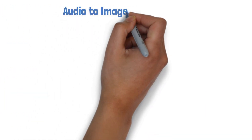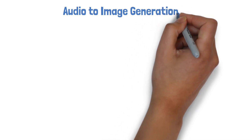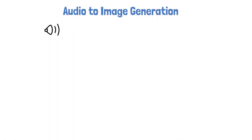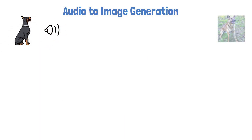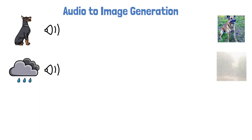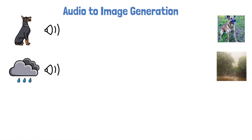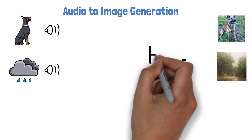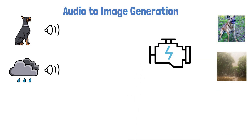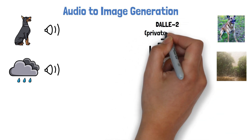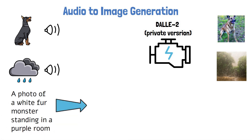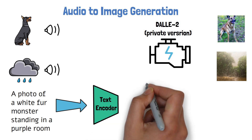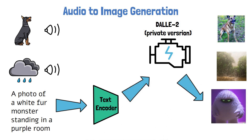Another capability that ImageBind enables is audio to image generation. As an example, they show they were able to provide the sound of a dog barking as input and generate an image of a dog, and also use the sound of rain to generate a rainy image. The way they did that is by taking a pre-trained version of the image generation model DALL-E 2 — actually a private Meta AI implementation of DALL-E 2 — and usually DALL-E 2 would get a text prompt, create an embedding for the text, and use that to generate an image.